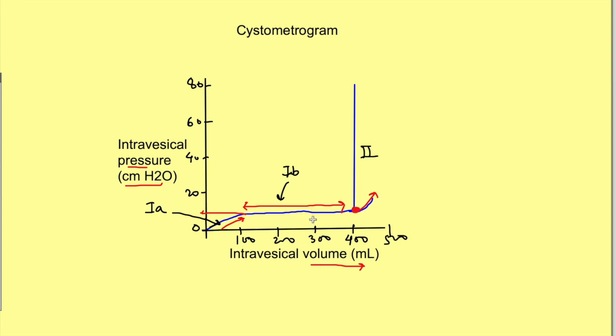For voiding to occur, there should be increase in the intravesical pressure. First urge of voiding occurs at 150 mL, and micturition reflex starts at around 400 mL. But this flat portion depicts the storage ability of the urinary bladder. So first let's see what makes this storage of urine possible in the urinary bladder.